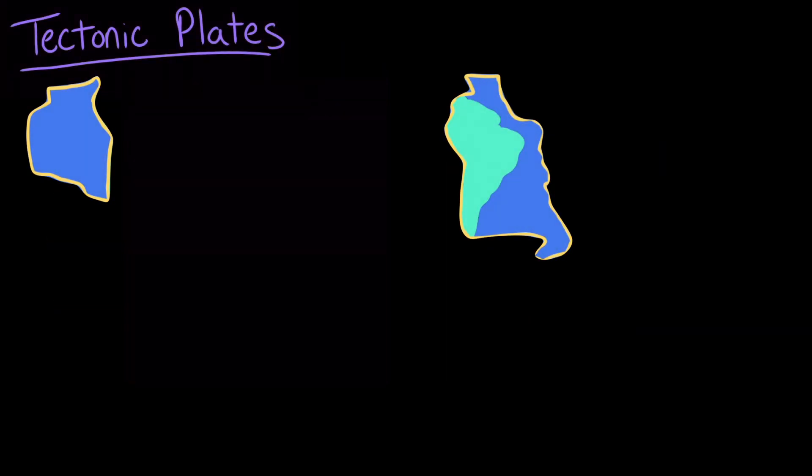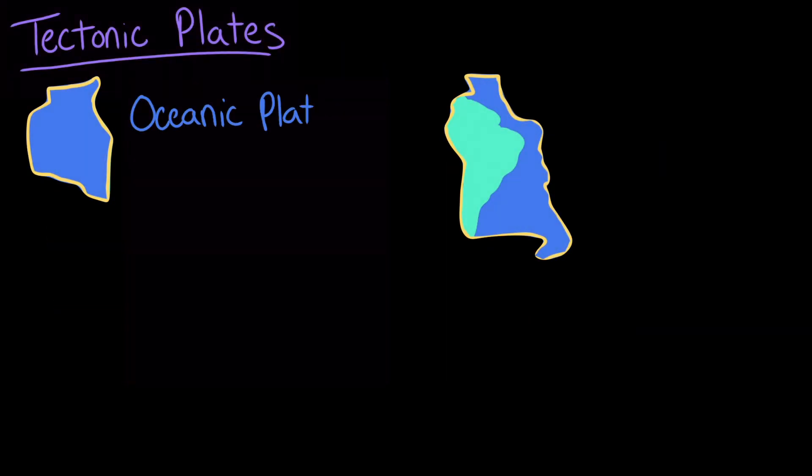There are two types of tectonic plates: oceanic plates and continental plates. The continental plates, as you've probably guessed, are the ones that make up the continents. The oceanic plates are the ones that make up the seafloor.